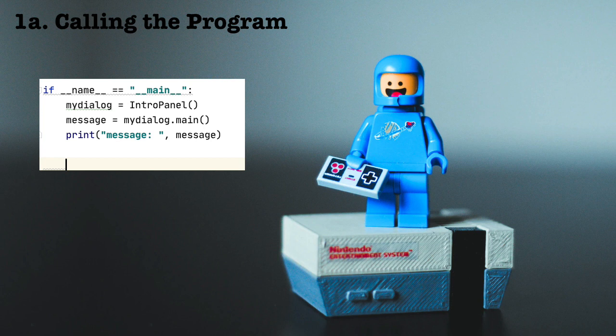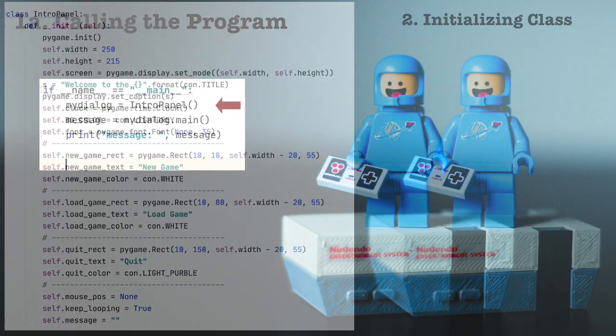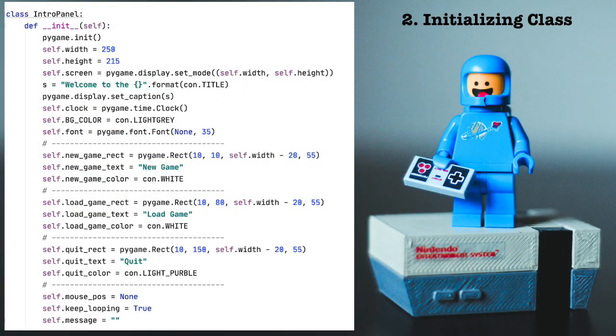It is easiest to contain all the code in one class. That way, all the code is wrapped up nicely and we will be able to simply plug this class into any program we like and use it. Let's step through this. 1a, calling the program. Here's how we instantiate the class. Let's look at the constructor for the InfoPanel class.